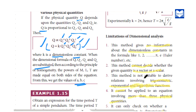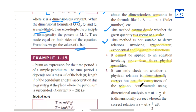Next, we will see the limitations of dimensional analysis. First, this method gives no information about the dimensionless constant — that is, numerical values like pi. For such values, this method is not sufficient. Second, this method is not suitable to derive relations for equations involving trigonometric, exponential, and logarithmic functions.